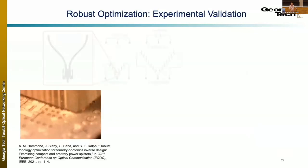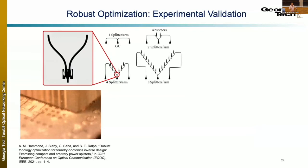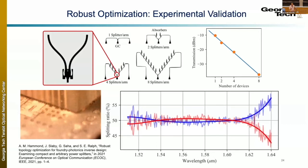We ran a simple fabrication experiment to validate robust optimization. We designed a 50/50 splitter for a commercial foundry platform — completely passive — and the design showed less than 2–3% variability across multiple wafers across almost 100 nanometers of bandwidth. This is significantly better than the state of the art, where splitters typically experience 10–30% variability, so we're very excited by these results.